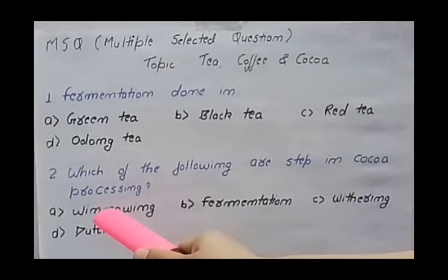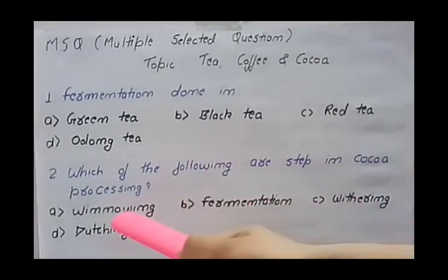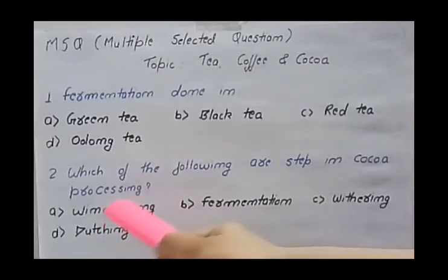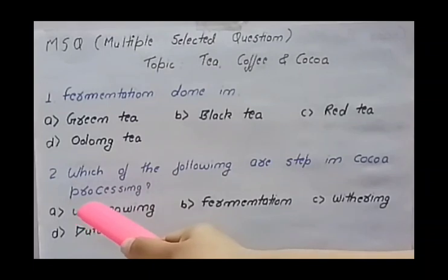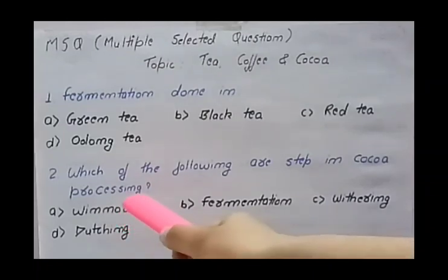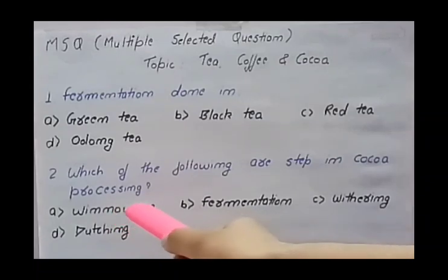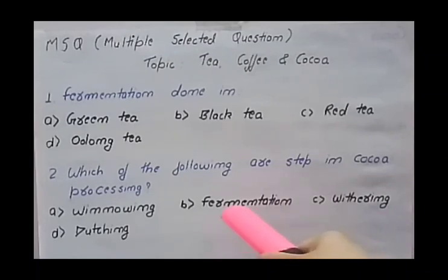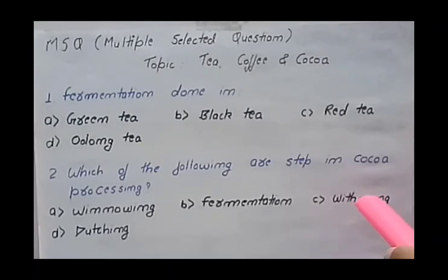Let's begin with the first option: winnowing. Winnowing is a process in cocoa processing — it means removing the outer skin of the cocoa beans. Second option is fermentation — yes, fermentation is done in cocoa processing. Third option is withering — no, withering is not a step of cocoa processing; it is a step of tea processing.